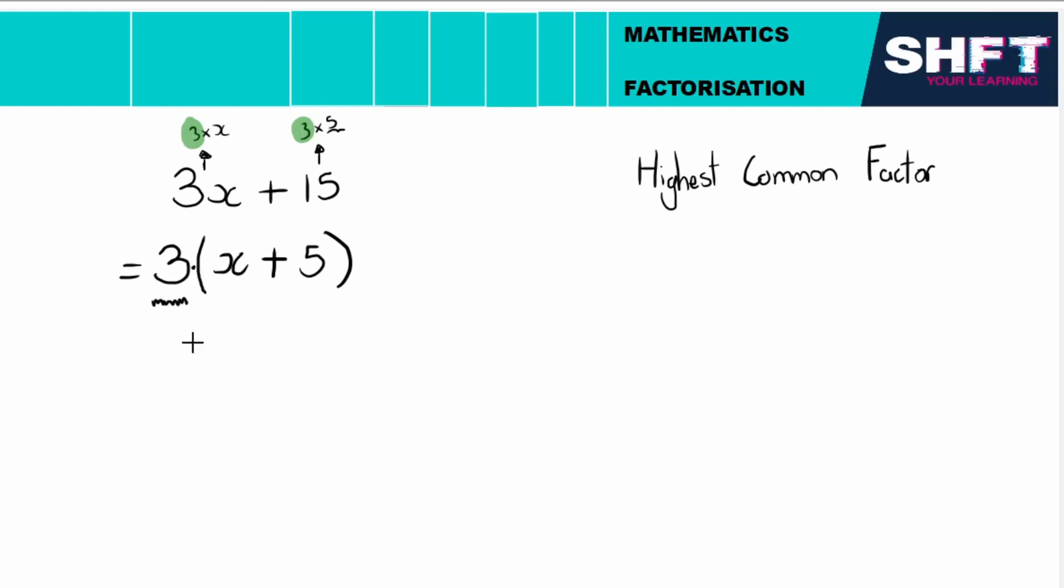So I now have this expression, but I've rewritten it as something multiplied by something. You can see that now, previously we had two terms, now we only have, big picture, we only have one term. So I have factorized this successfully because I have rewritten this expression as something multiplied by something. This is called taking out the highest common factor, or the HCF.